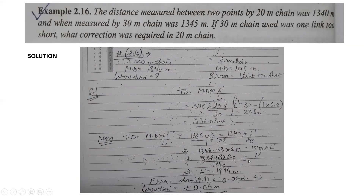What did we get from the 20-meter chain? We got the incorrect length as 19.94 meters. After that, we will find the error. The formula for error is: incorrect length minus correct length. Incorrect length is 19.94, minus correct length of 20. So this value is minus 0.06.